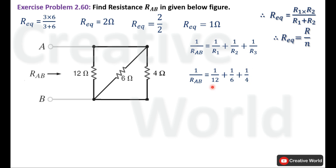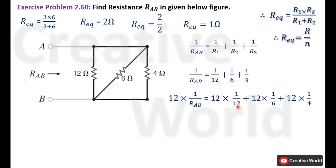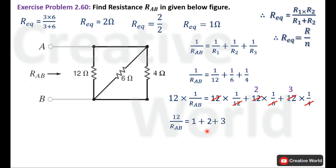To solve for RAB, we multiply both sides of the equation by 12 to eliminate the denominators. The 12 cancels with 12 leaving 1; 12 divided by 6 gives 2; and 12 divided by 4 gives 3. The equation becomes 12 divided by RAB equals 1 plus 2 plus 3, which simplifies to 12 divided by RAB equals 6.